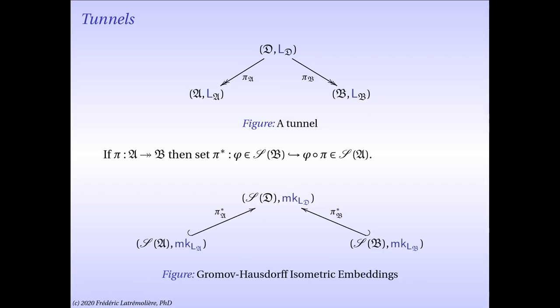Such a tunnel actually gives rise to a particular example of a Gromov-Hausdorff isometric embedding. Indeed, if we consider the dual maps to the quantum isometries in our tunnel, they become actual isometries from the state space of A with its Monge-Kantorovich metric into the state space of D with its Monge-Kantorovich metric, and similarly for B. However, this is a very specific type of Gromov-Hausdorff embedding. We specifically require, first, that we embed the state spaces into another state space, and second, that the isometries we use are the dual maps of star epimorphisms.